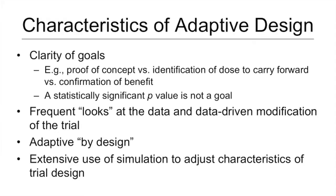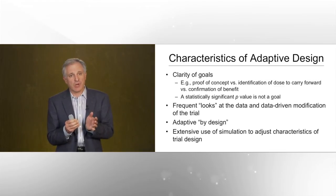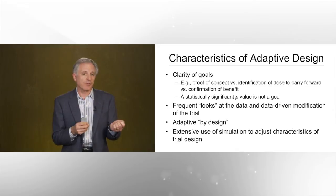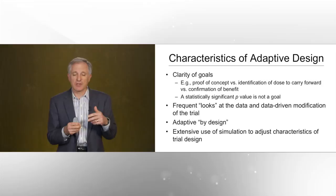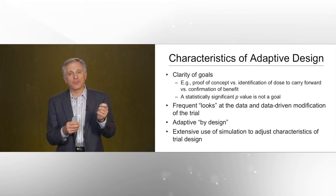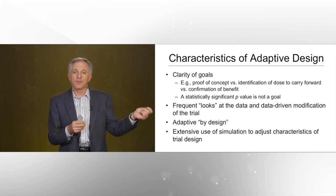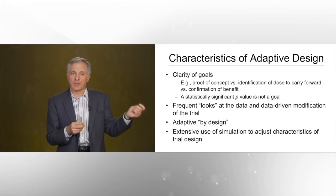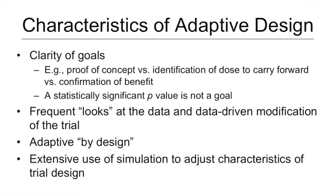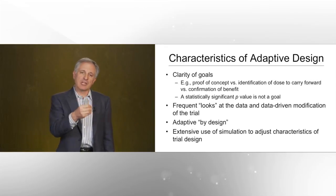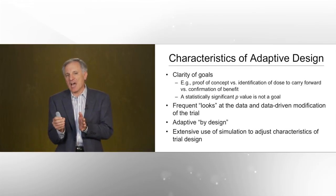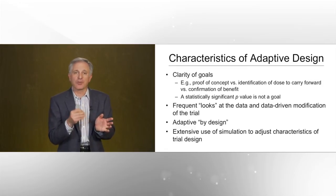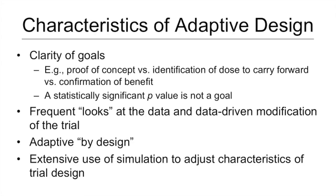The process of designing a clinical trial using an adaptive approach has characteristics that distinguish it from traditional design. Because one has to consider the kinds of changes that might be made, we often obtain greater clarity of goals — for example, whether we're trying to show proof of concept, identify the dose to carry forward into phase 3, or confirm a benefit shown in earlier trials. A statistically significant p-value is never the goal of an adaptive trial, because it's easy to generate a design that yields a significant p-value but fails to answer what the next stages of drug or device development should be. These designs take frequent looks at the data, and are adaptive by design — pre-specifying adaptations and their criteria, not making post hoc or ad hoc changes.